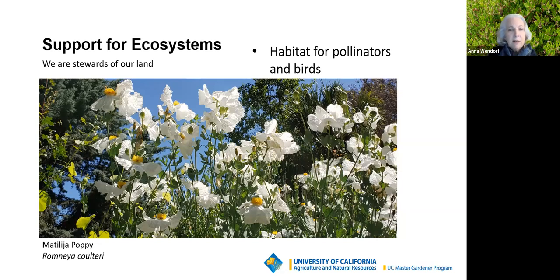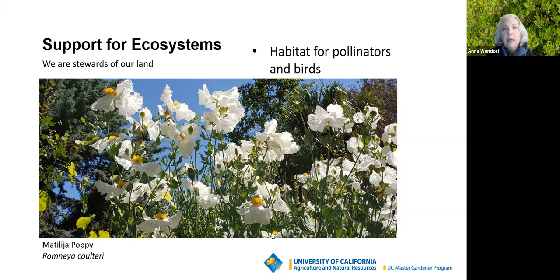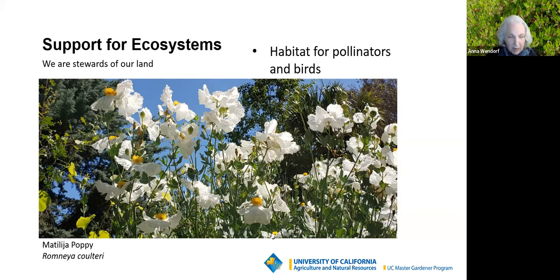One of the reasons we plant native plants is to support the ecosystem — we'll talk about why birds are declining and how we need to support them, and the habitat for pollinators, which we've all heard a lot about in recent years. This is a matilija poppy — it's best in a wilder area of the yard, maybe not right in the center, but it's a beautiful poppy flower beloved by many painters and an absolutely gorgeous plant.